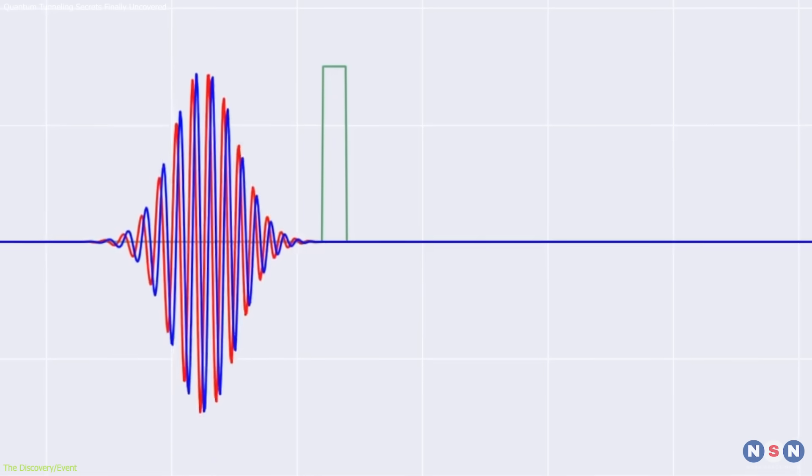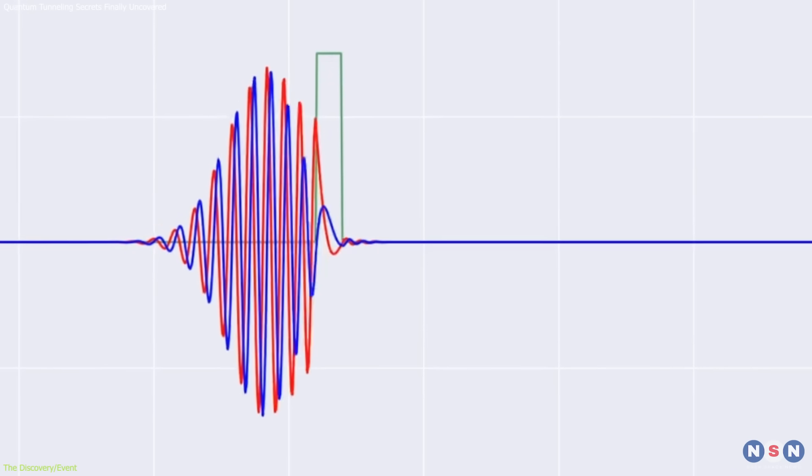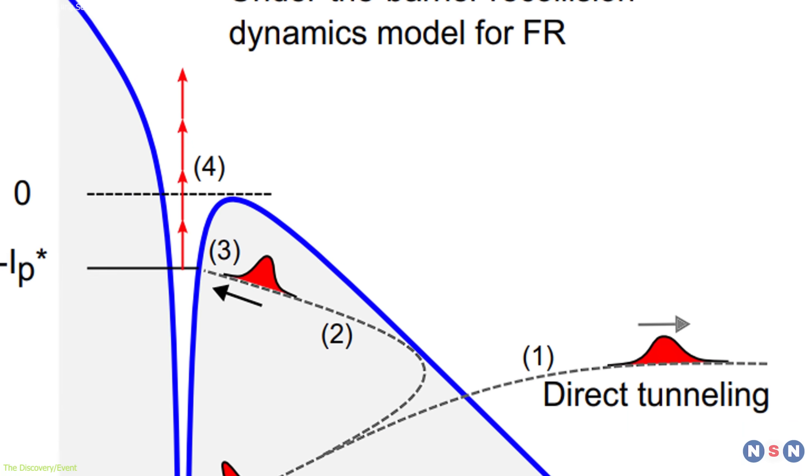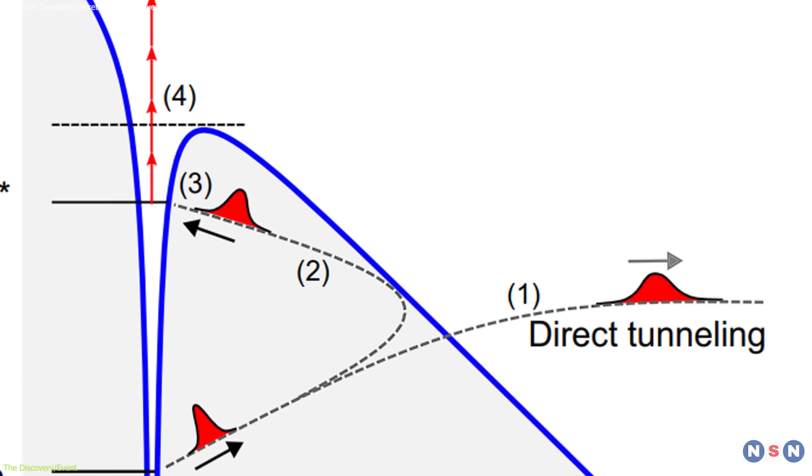Their results revealed a surprising behavior. Rather than smoothly passing through the barrier, electrons were observed to collide with the atomic nucleus while still under the barrier.